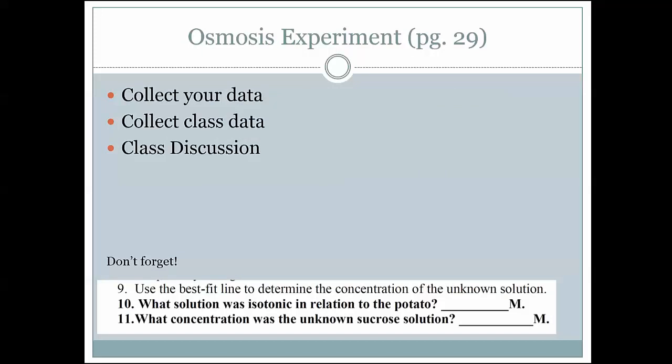So we're going to collect our data. We're going to then put together class data and look at the data together and discuss what happened. And you're going to test those known concentrations of sugar that we will make at the beginning. And you're also going to test an unknown concentration of sugar. And you're going to determine two things this week that you can't forget about. What solute concentration was isotonic to the potato? And I'm not asking which concentration that you tested was isotonic, but using the standard curve, what would be isotonic to that potato? Even if you didn't test it directly this week, you can predict it. And what concentration was the unknown sucrose solution? You can do that also with your standard curve.